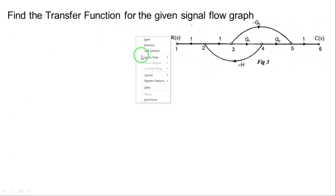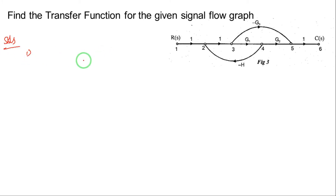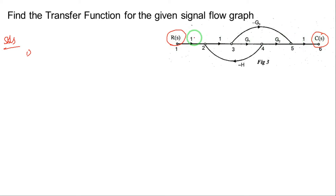Let's take a simple example. The question is: find the transfer function for the given signal flow graph. Remember the steps from the previous slide. Step one: identify the number of forward paths in the signal flow graph — that means paths from input to the output. Those are called forward paths.